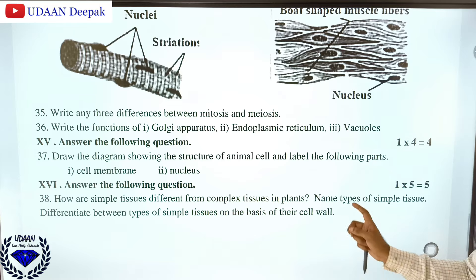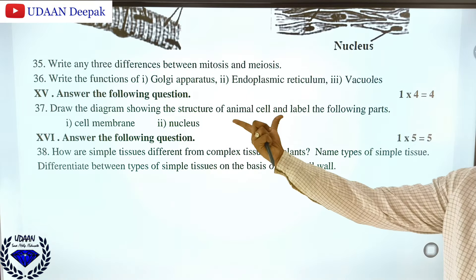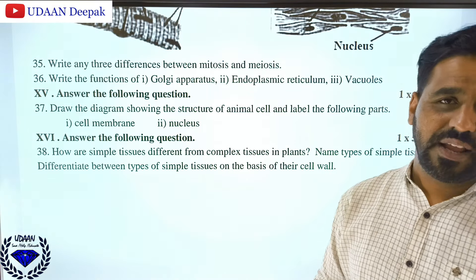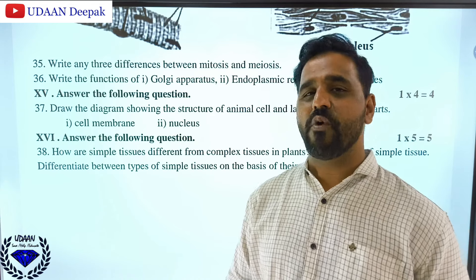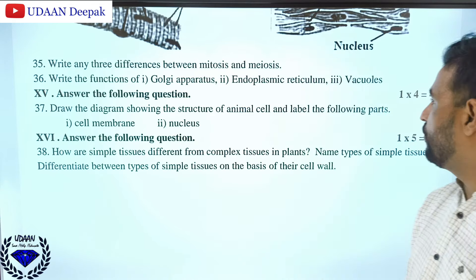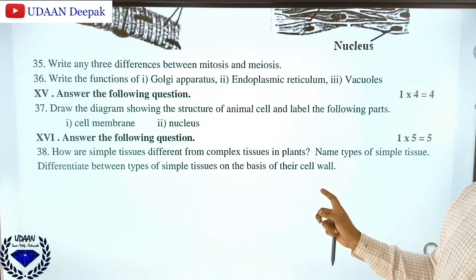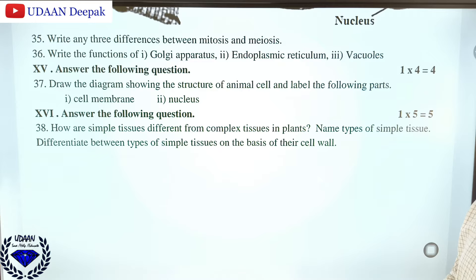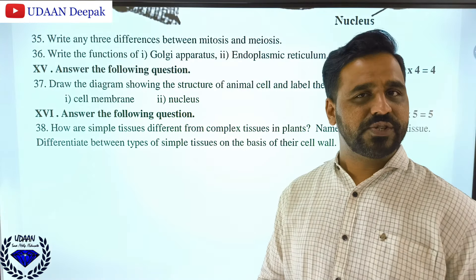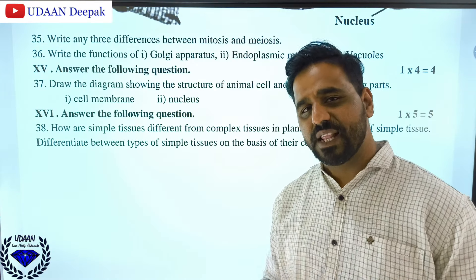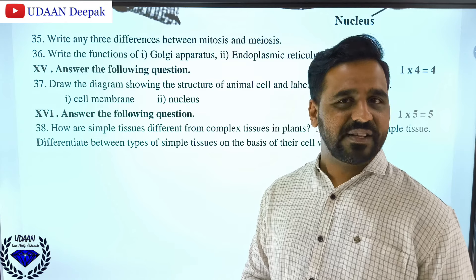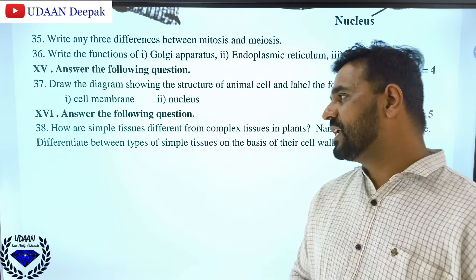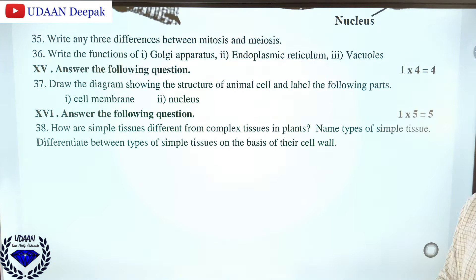The important figure is the animal cell. Animal cell and plant cell are most important - one question directly for four marks will be asked. How are simple tissues different from complex tissues? Simple tissues include parenchyma, collenchyma, and sclerenchyma, whereas xylem and phloem are complex tissues. Name the types of simple tissue: parenchyma, collenchyma, and sclerenchyma, which are meristematic and permanent simple tissues.